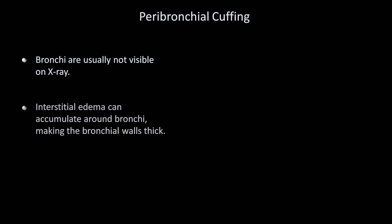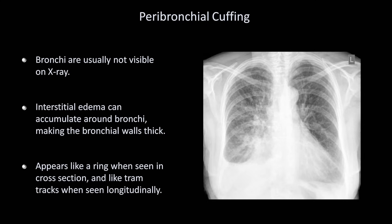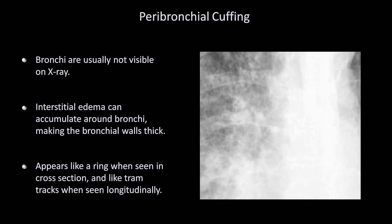Visible bronchi are not only a manifestation of air bronchograms, but also of peribronchial cuffing. Interstitial edema can accumulate around bronchi, making the bronchial walls thick. This appears like a ring when seen in cross-section, and like tram tracks when seen longitudinally. Here is an x-ray with a number of different findings. If we zoom in on the right mid-lung zone, we can see two ring-shaped structures adjacent to one another, which are bronchi seen in cross-section.